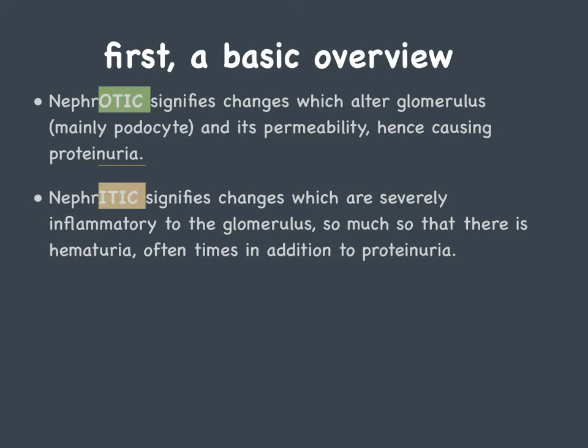So with nephritic you have hematuria, you may also have proteinuria, and if severe, oliguria.